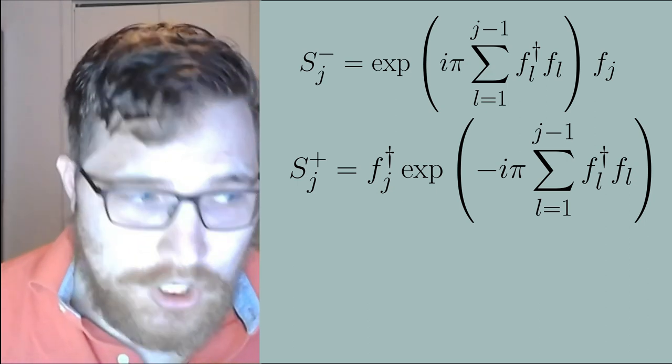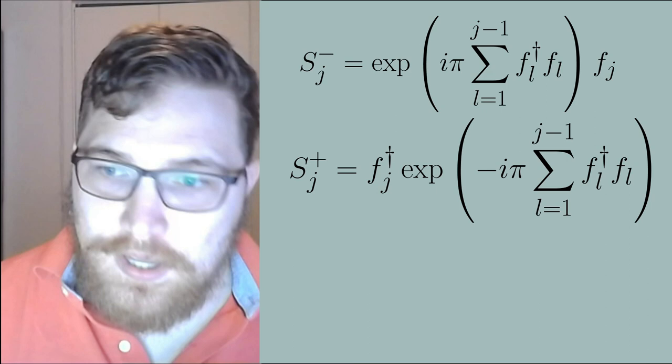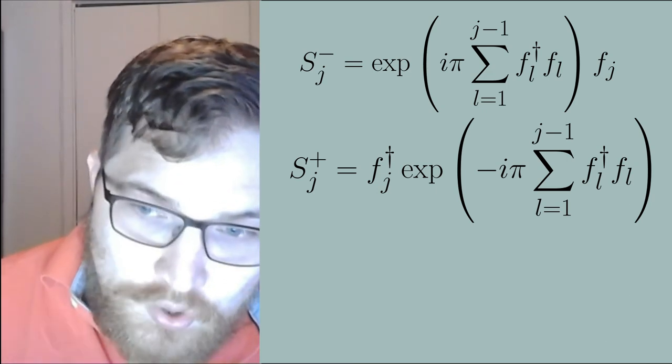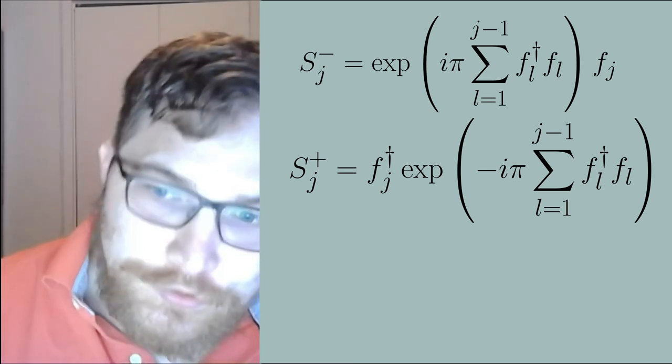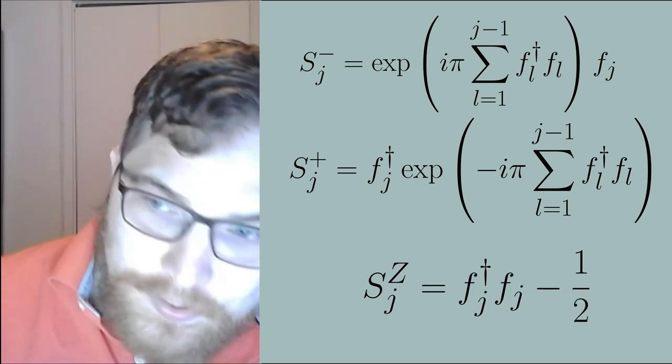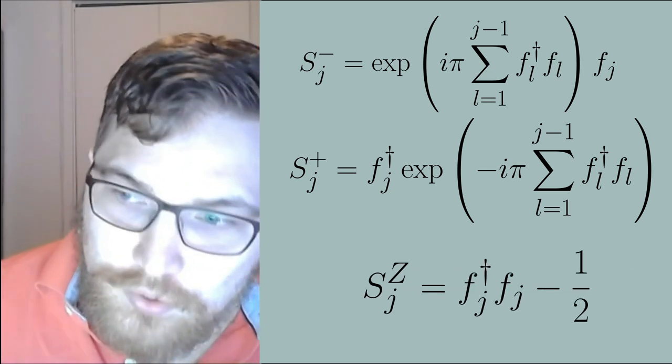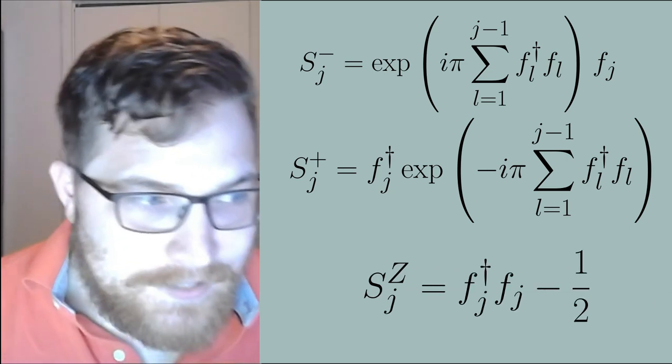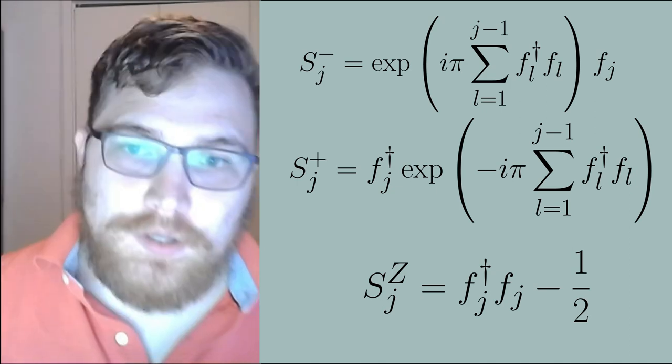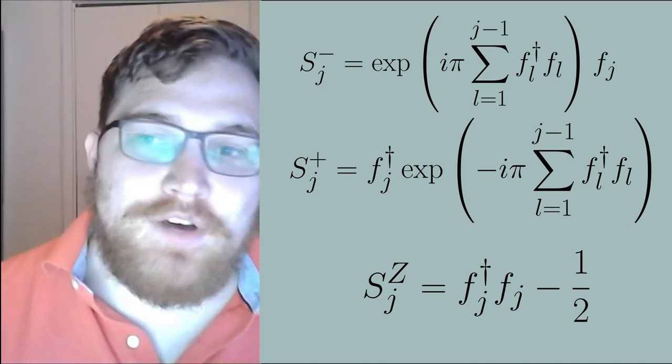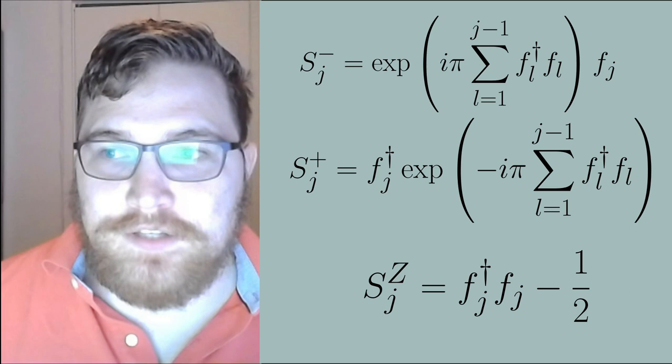So this is a highly non-local transformation. From these definitions we can very easily read off that our initial intuition about the z operator was actually true and it is in fact the number operator minus one half. So these three relations give us the Jordan-Wigner transformation.